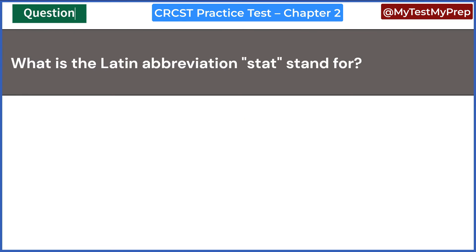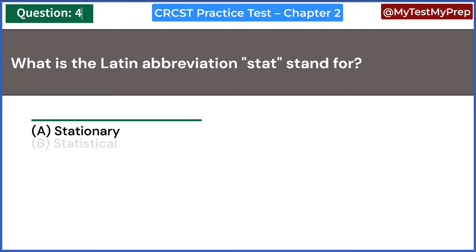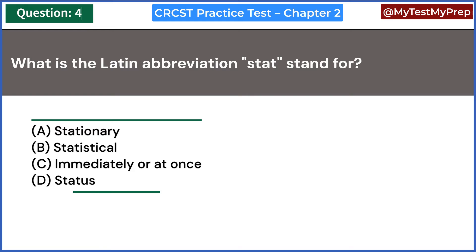What does the Latin abbreviation 'stat' stand for? A. Stationary. B. Statistical. C. Immediately, or at once. D. Status. Answer: C. Immediately, or at once.